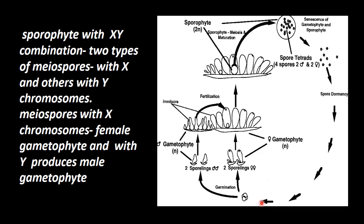After the dormant stage, when favorable conditions are there, the spores develop — female gametophyte from X-bearing spores and male gametophyte from Y-bearing spores separately. So one is a male plant and one is a female plant. Then they combine together to form the sporophytic stage. Meiospores with X chromosomes produce female gametophyte and with Y produce male gametophyte. When they combine together, they form a zygote and it produces sporophytes. This is how sex is determined in Sphaerocarpus, that is the bryophyte.